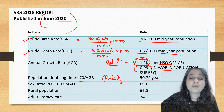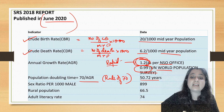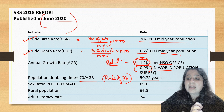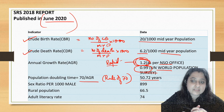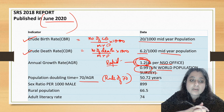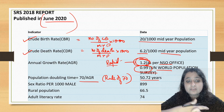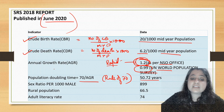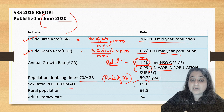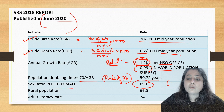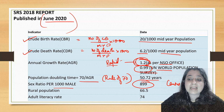Population doubling time in India is 50.72 years. We use the Rule of 70 — divide 70 by the current growth rate of 1.2. The current sex ratio is 899 per 1000 males; however, according to the Census it was 943.